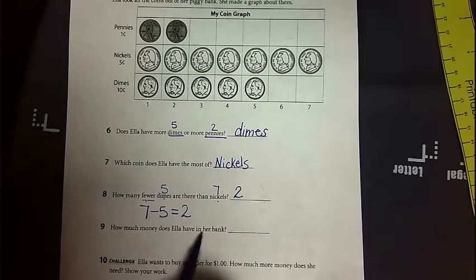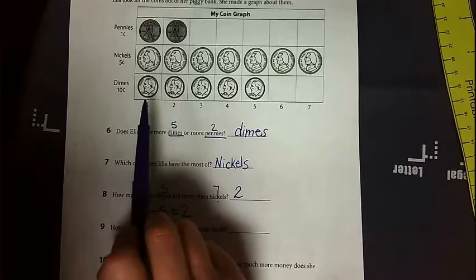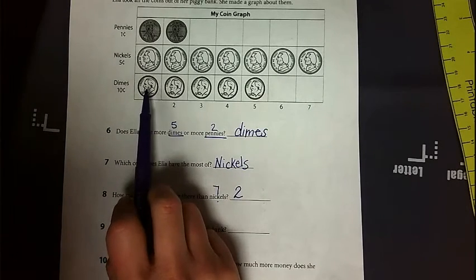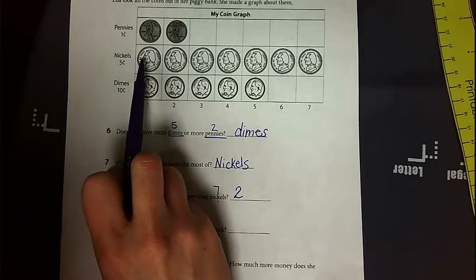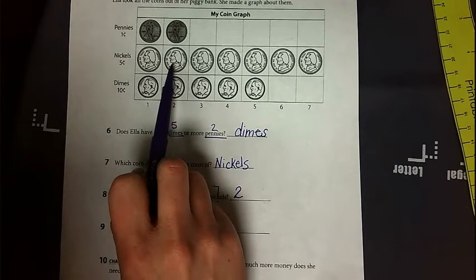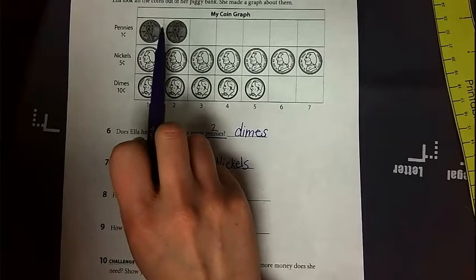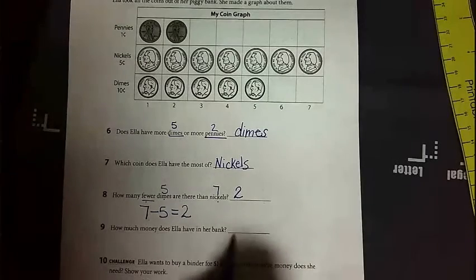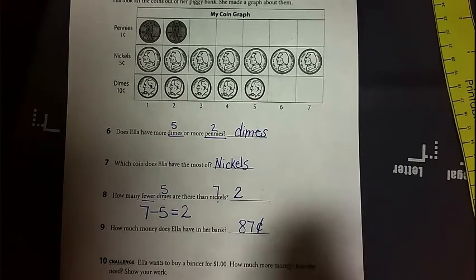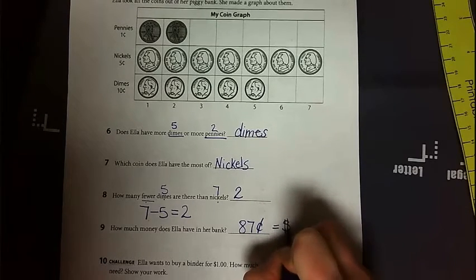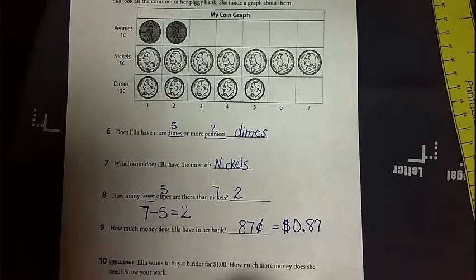And number nine. How much money does Ella have in her bank? This is where we have to add up all the coins. Now what they're worth matters. So we're going to count by tens. Ready to count with me? 10, 20, 30, 40, 50. And I'm going to add on fives because they're worth 5 cents. 60, 65, 70, 75, 80, 85, 86, 87. So how much money does she have in her bank at all? She has 87 cents. Now I'm going to put the cent sign, but I can also write that it's equal to the dollar sign, a zero decimal point and an 87.